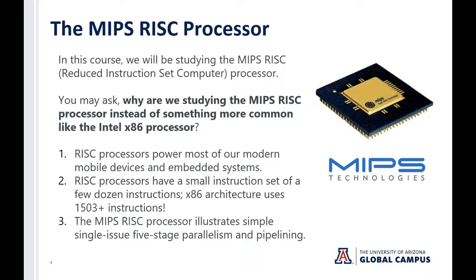On the last slide we gave a general overview that applies to nearly all computer architectures. But in this course, we're going to be studying the MIPS RISC processor specifically. MIPS is a company that's been producing processors for decades, and RISC stands for Reduced Instruction Set Computer. It's a very specific type of processor that has a small number of instructions it can decode and execute. Risk processors power most of our modern mobile devices and embedded systems — the most common version in our cell phones is an ARM processor, which is a type of RISC processor.